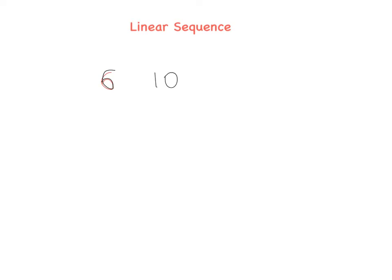10, 14, and 18. The difference is plus 4, plus 4, plus 4. This is the rule for a linear sequence — we have a common difference of plus 4, and it is always the same every single time. What if the common difference is different every single time?